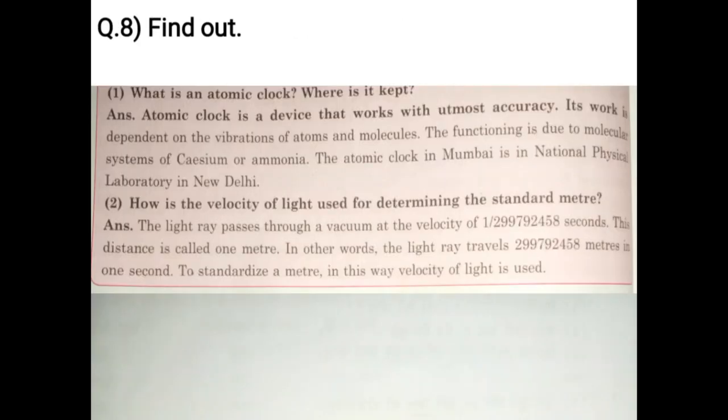Find out. What is an atomic clock? Where is it kept? Atomic clock is a device that works with utmost accuracy. Its work is dependent on the vibrations of atoms and molecules. The functioning is due to molecular systems of calcium or ammonia. The atomic clock in Mumbai is in National Physical Laboratory in New Delhi.